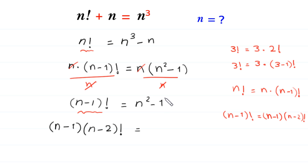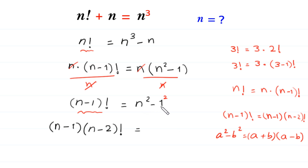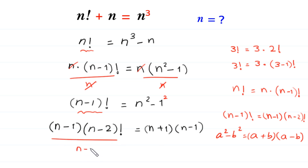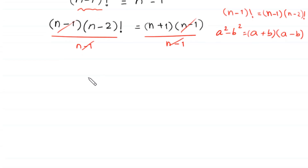We consider 1 as 1 squared, so (n minus 2) factorial times (n minus 1) equals n squared minus 1 squared. Applying the algebraic identity A squared minus B squared equals (A plus B)(A minus B), we write n squared minus 1 as (n plus 1)(n minus 1). Dividing both sides by (n minus 1), we get (n minus 2) factorial is equal to n plus 1.